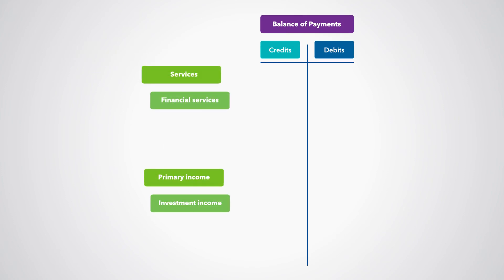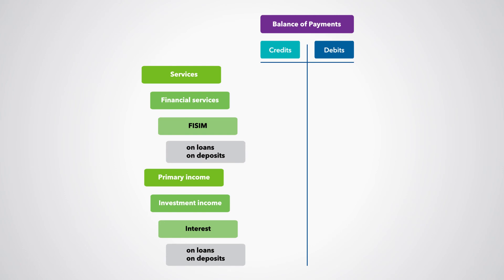The balance of payments entries for FISIM and interest on the loans and deposits are as follows. In the services account of Country A, the entries for FISIM receivable would be 340 credit — that is 200 plus 140. In the primary income account, the entries would be interest receivable on loans to non-resident non-financial corporations, 300 credit (the pure interest), and interest payable on deposits to non-resident households, 420 debit (the pure interest).